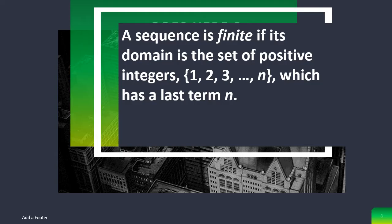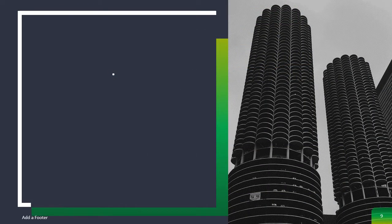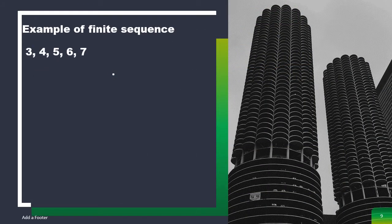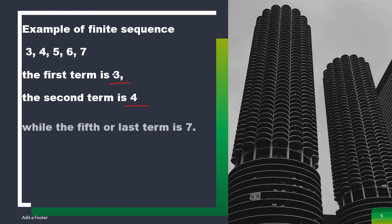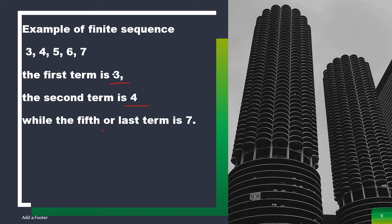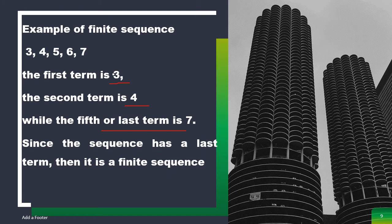A sequence is finite if its domain is the set of positive integers which has a last term N. Example of a finite sequence: 3, 4, 5, 6, 7. The first term is 3, the second term is 4, and the fifth or last term is 7. Since the sequence has a last term, then it is a finite sequence.